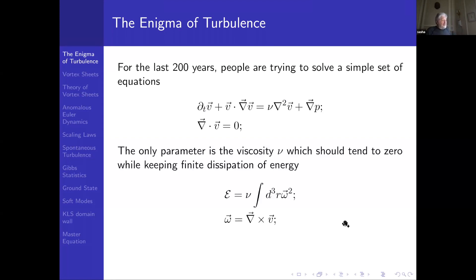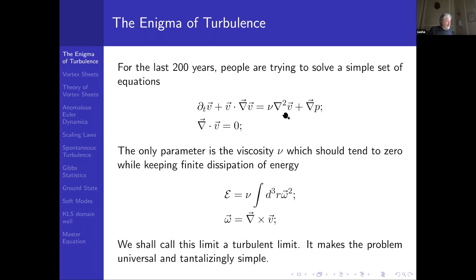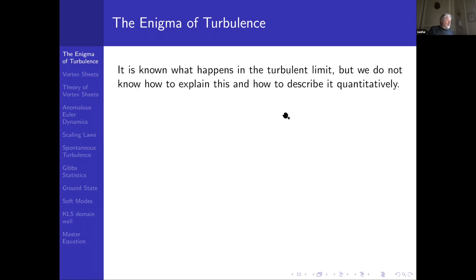You will have to solve it in the limit of when viscosity tends to zero at fixed energy dissipation. That's a universal equation — it's a limit of this equation when viscosity goes to zero. Everybody knows that's not a smooth limit, simply because viscosity enters in front of the highest derivative in this equation. So we suspect it's not a trivial limit. Indeed, that's turbulence. We know what happens in the turbulence limit, but we don't know how to explain this and describe it quantitatively. That will be the purpose of my talk.